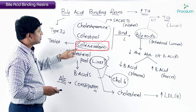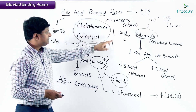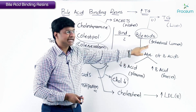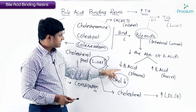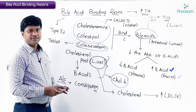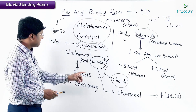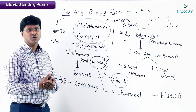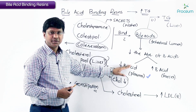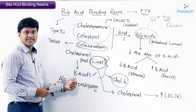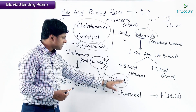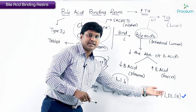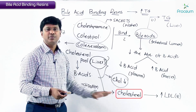To recap: bile acid binding resins include cholestyramine, colestipol, and colesevelam. These drugs bind with bile acids and inhibit their absorption within the intestinal lumen. This decreases bile acid content in the plasma and increases bile acid content in the feces. Since bile acids are synthesized from cholesterol, excess cholesterol is utilized for bile acid synthesis, reducing plasma cholesterol levels. The liver compensates by increasing LDL receptors to bring more cholesterol in from the plasma.